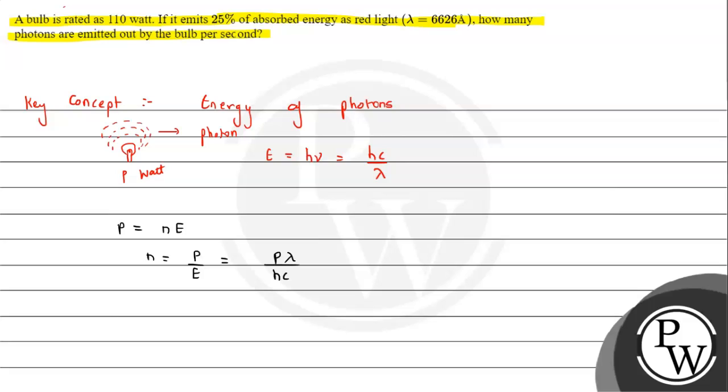The bulb is rated as 110 watts. If it emits 25% of the absorbed energy as red light, how many photons are emitted per second? We have to focus on this: the power is 110 watts, but it emits only 25% as light. So we write the power as 110 × 25/100. λ is given as 6626 angstrom, which we convert to meters, and divide by hc.